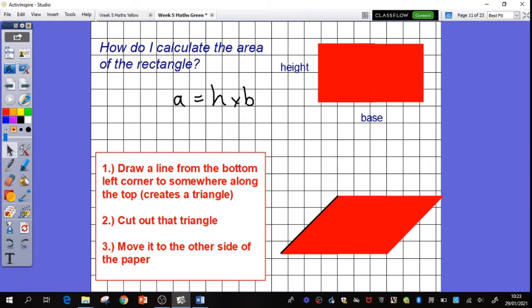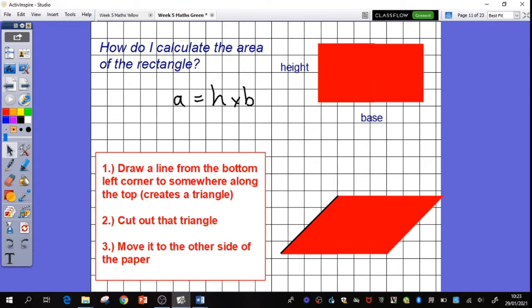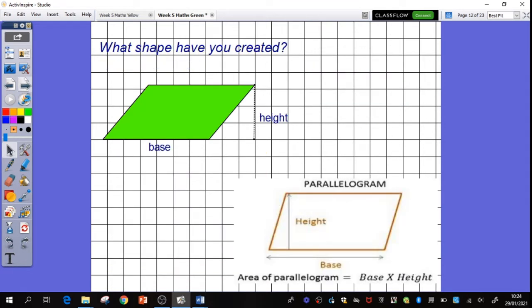And hopefully what you've noticed is you have now created a parallelogram. The formula to find the area of a parallelogram is just base times its height. Because, as you can see, the area hasn't got any bigger, hasn't got any smaller. I started with a rectangle and I haven't added any space to the inside. I haven't taken away any space to the inside. So the area must be exactly the same. The formula to find the area is exactly the same. Height times base.